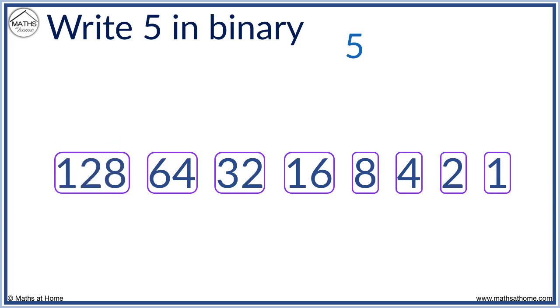128, 64, 32, 16 and 8 are all too big. However, 4 is smaller than 5 so we can use a 4. We write a 1 below the 4 to show we have used 1 four. We subtract 4 from 5 to get 1 remaining.